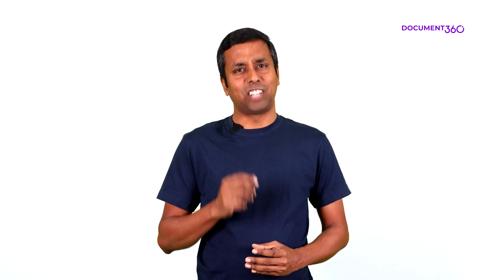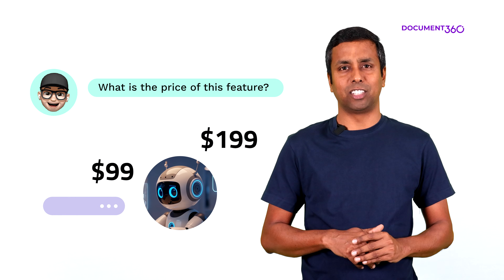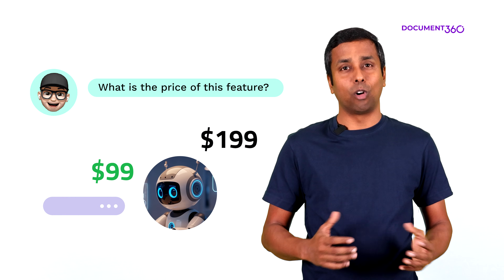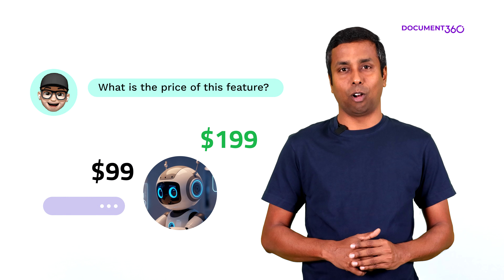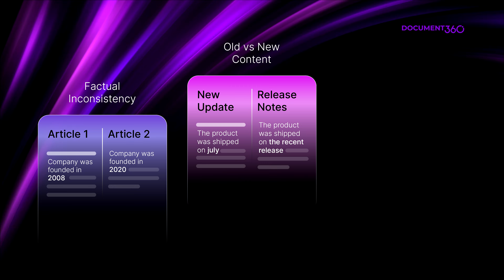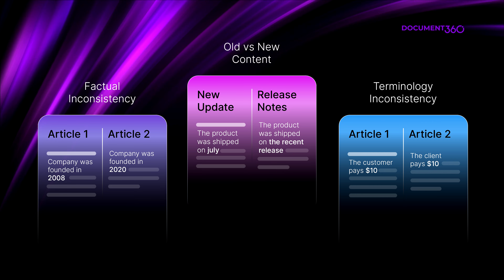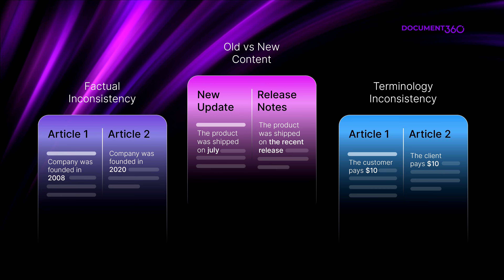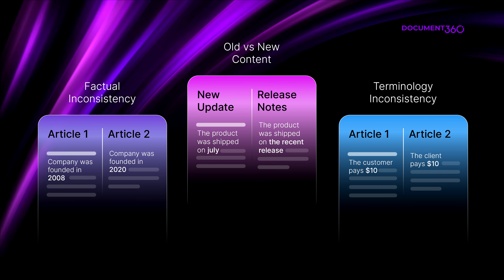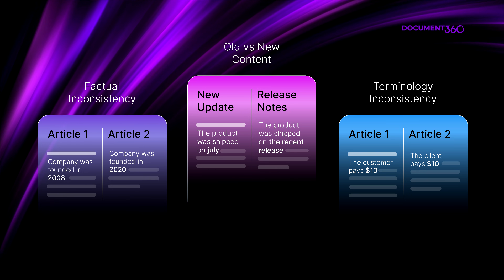Chatbots amplify this inconsistency, leading to hallucinations that erode trust in technology. Content ambiguity happens because of factual inconsistency, outdated content clashing with new content, and terminology inconsistency — using different terms to mean the same thing.